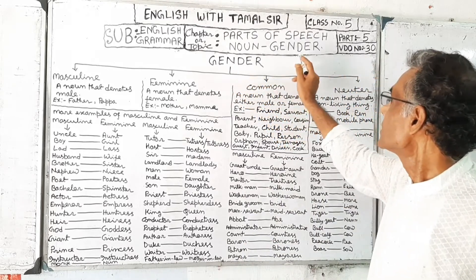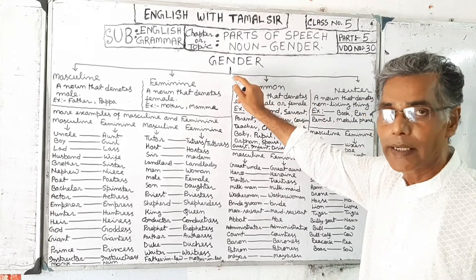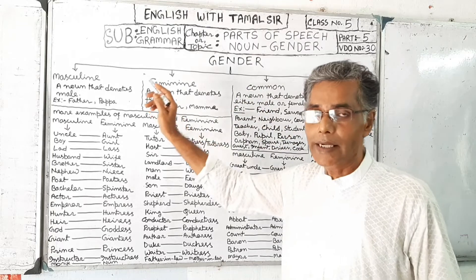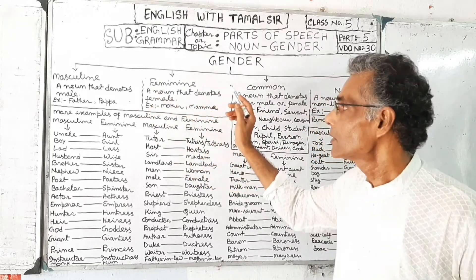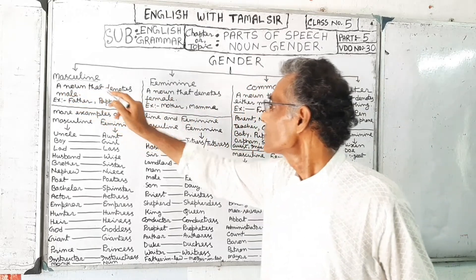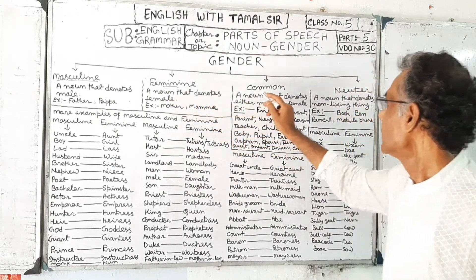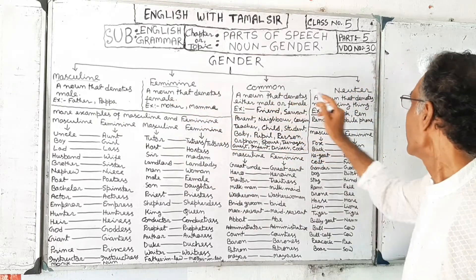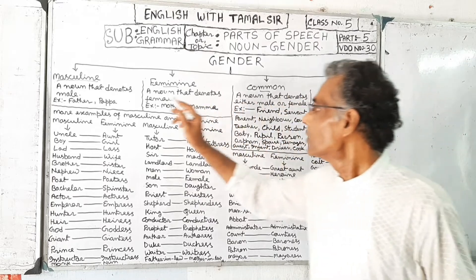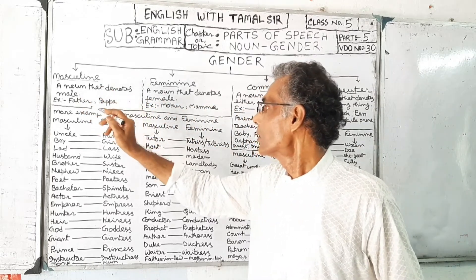Now, noun has gender. Gender is divided into four types. The first one is masculine, then feminine, then common, and then neuter. Masculine means a noun that denotes male.